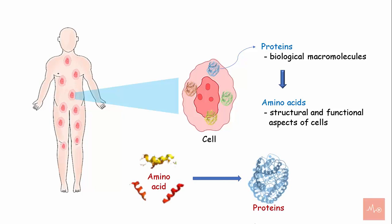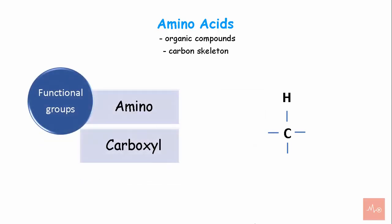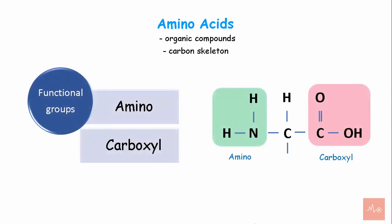Proteins are made up of amino acids linked by peptide bonds. There are 20 amino acids found in the human body. Amino acids are a group of organic carbon compounds with a carbon skeleton and two functional groups: the amino group and the carboxyl group. When both these groups are attached to the same carbon, it is called the alpha carbon, making it an alpha amino acid. The alpha carbon binds to a side chain represented by R, which is different for each amino acid.